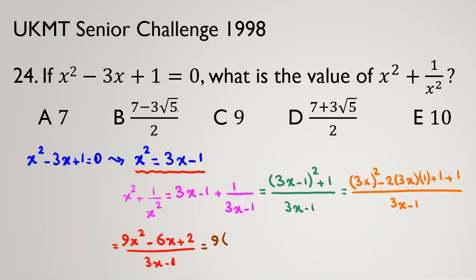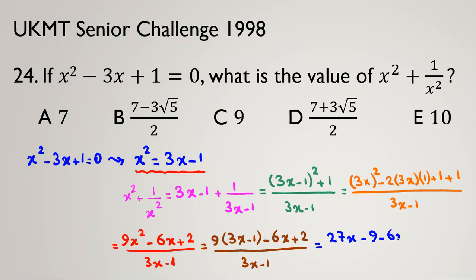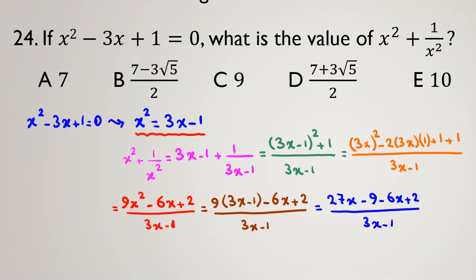Replacing x squared with (3x minus 1): we get 9(3x minus 1) minus 6x plus 2, all over (3x minus 1). Expanding: 27x minus 9 minus 6x plus 2, which simplifies to 21x minus 7, all over (3x minus 1).